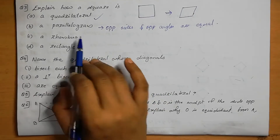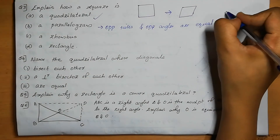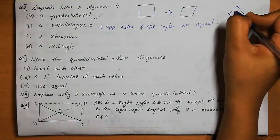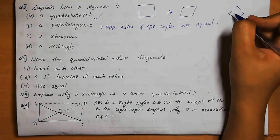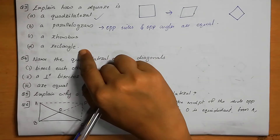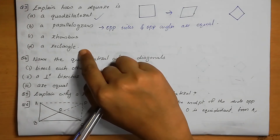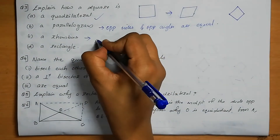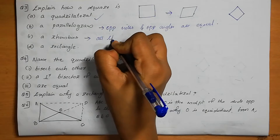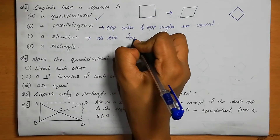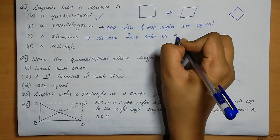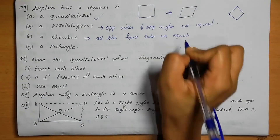A square is a rhombus. Rhombus means all four sides are equal. In a square, all four sides are also equal. So a square is a rhombus because all four sides are equal.